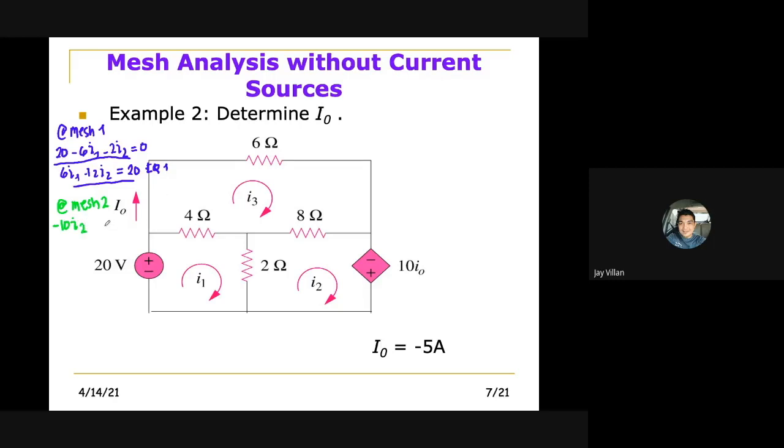Wait, that one earlier is wrong. This should be plus. Correct. Let's correct that. So this should be plus. It should be plus. Therefore, this should be minus 2I2. So we add this for minus 4, minus 2, minus 4I1, minus 2I1. That is equal to minus 6I1.